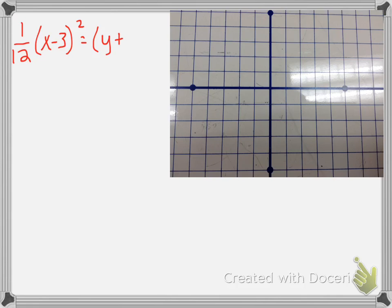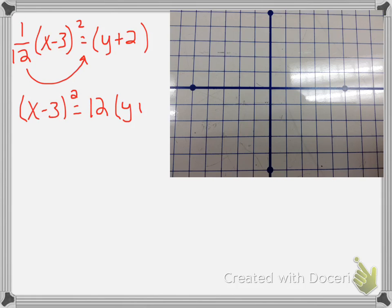The only difference in this next problem is that the squared term is not by itself, so I have to get the 1/12 over. Since it's a fraction, we multiply by its reciprocal. Another way to think about it is that when a fraction crosses the equal sign, it flips — so it becomes 12 over 1. Now we have the same type of problem. Take this time to pause the video and work this problem out for yourself.